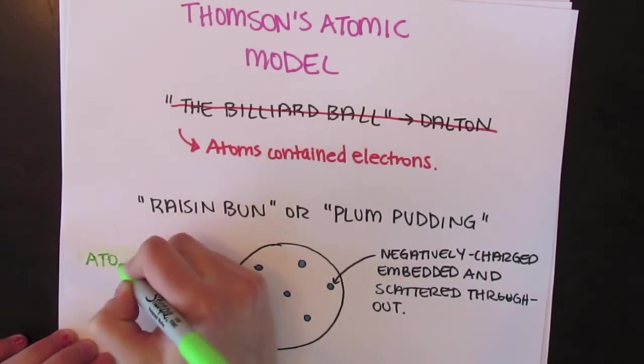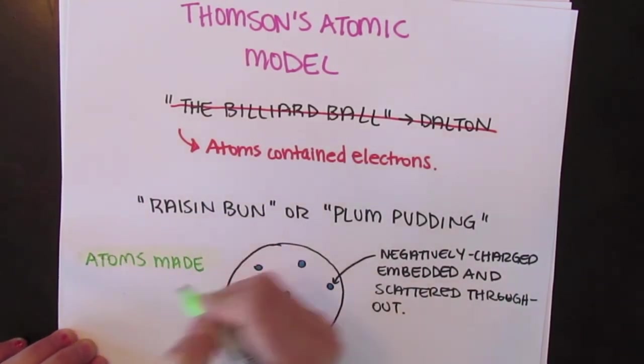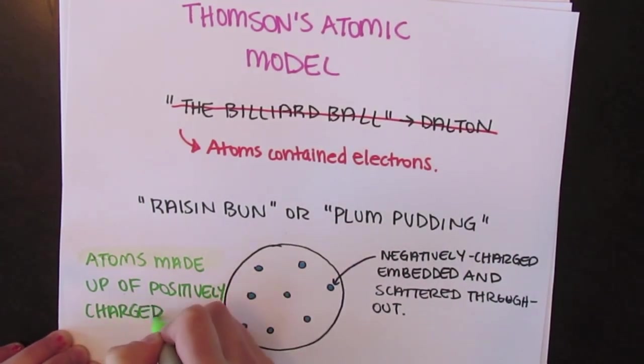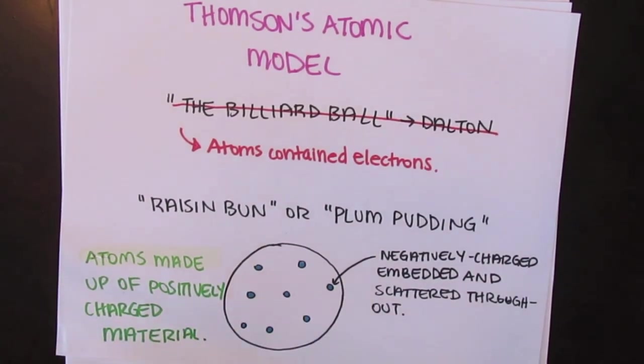Thomson's model of the atom consisted of a positively charged sphere, in which the negative charges were embedded very much like raisins in a bun. Thomson's model became known as the raisin bun or plum pudding model of the atom.